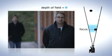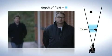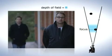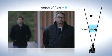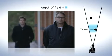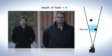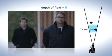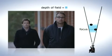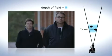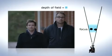In low light conditions, the depth of field is at a minimum. This is because the lens aperture is fully open, so as to allow as much light as possible through to the camera sensor.